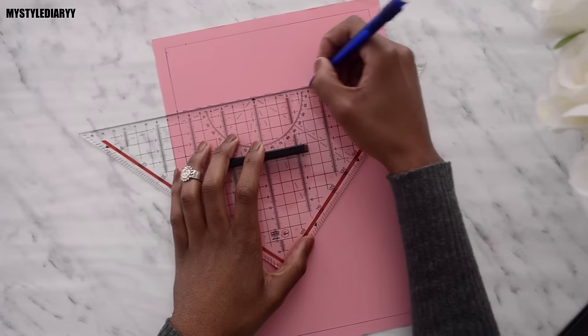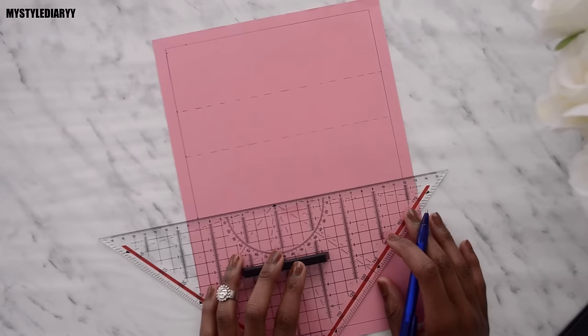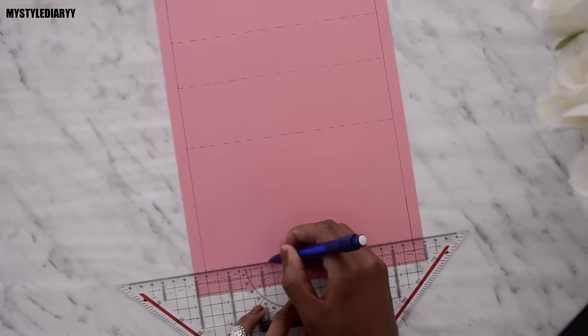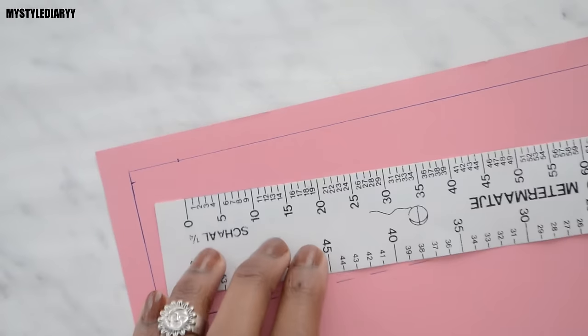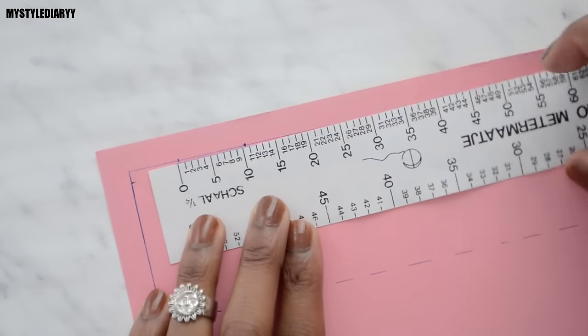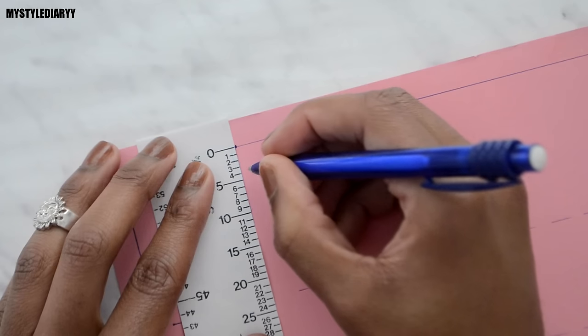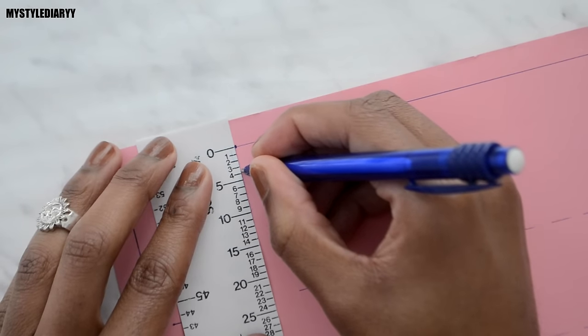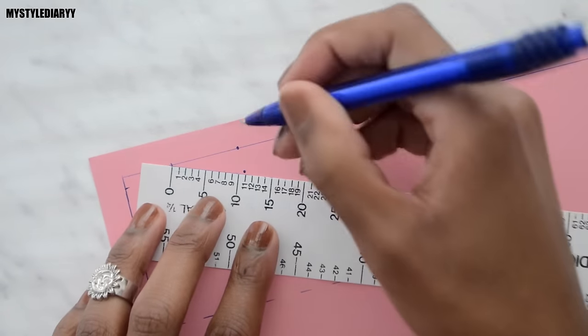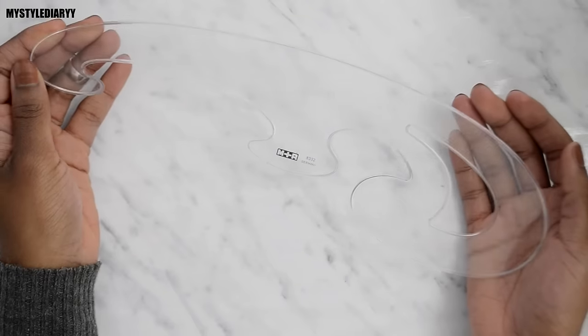Now square off from each point like so. From the neck point measure 10 centimeters to the right and three and a half centimeters downwards. Draw your shoulder measurement. Draw the neckline, use a French curve for this.